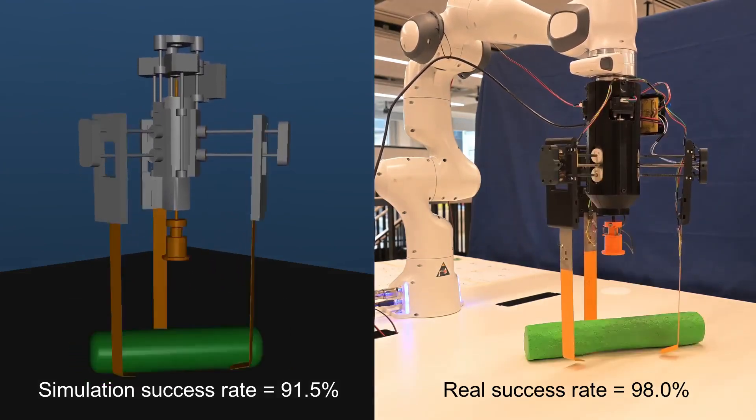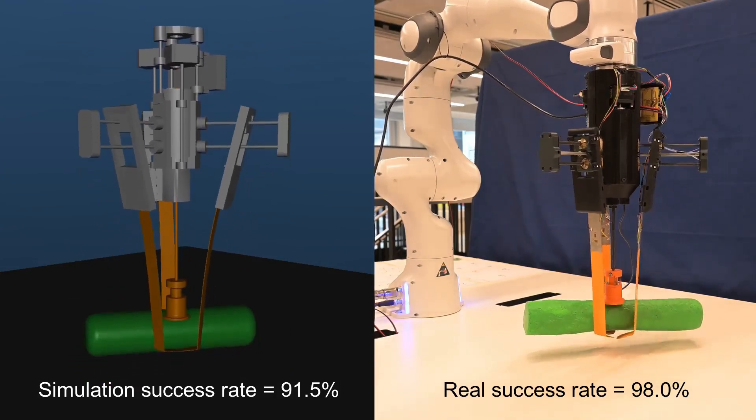Across 3 finger stiffnesses, the average sim to real difference was 3.1%.